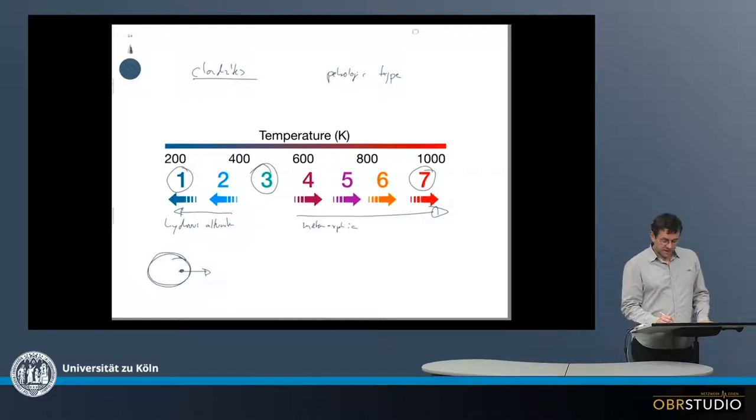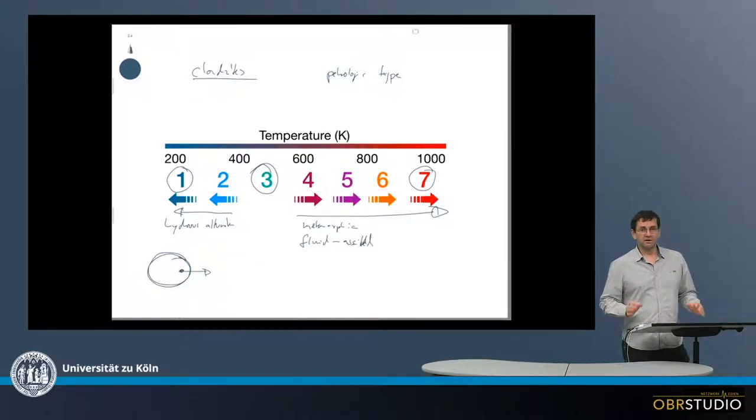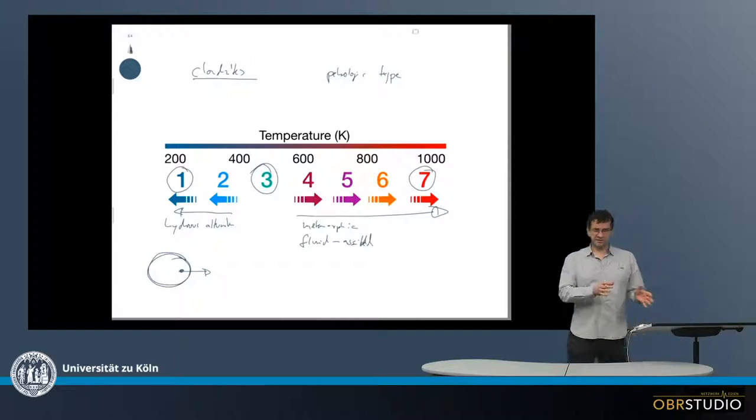But still with the higher petrologic types it might not be just anhydrous metamorphic overprint but maybe some kind of fluid-assisted metamorphic alteration. Also the numbers, the petrologic types type 4 type 5, they're not very clearly associated to a certain specific temperature. This is rather a more qualitative scale.